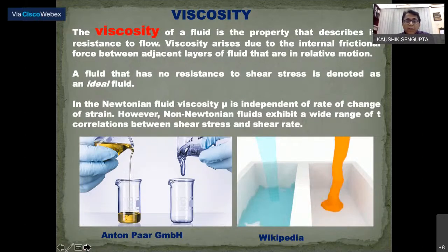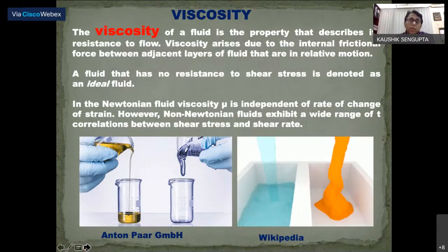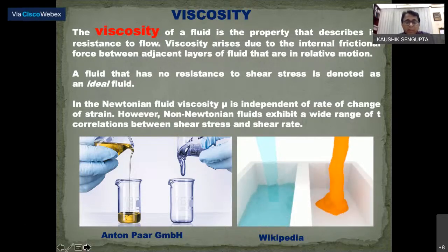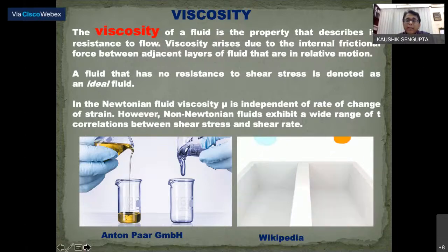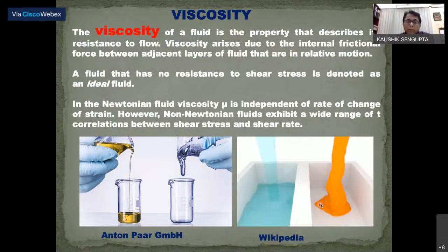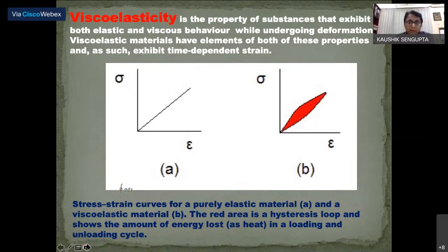Viscosity is the resistance between adjacent layers of a fluid when in motion. In Newtonian fluids, viscosity (eta) is independent of the rate of strain change. In non-Newtonian fluids, a wide range of correlations between shear stress and strain are exhibited. A GIF from Wikipedia illustrates how a normal fluid flows versus how a viscous fluid flows.